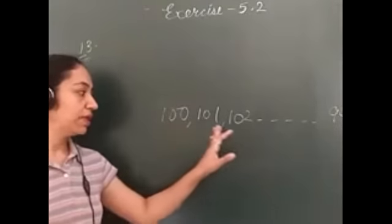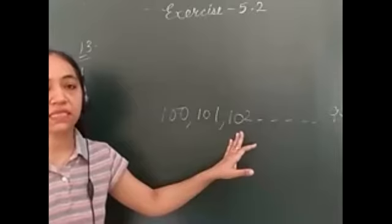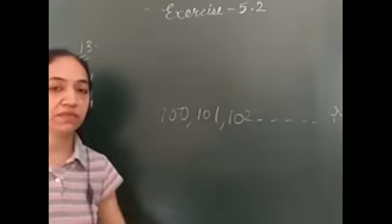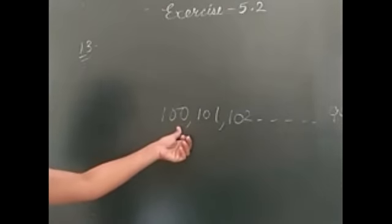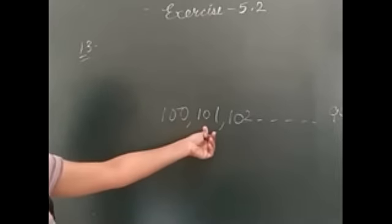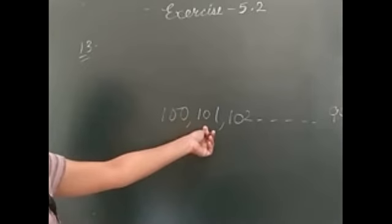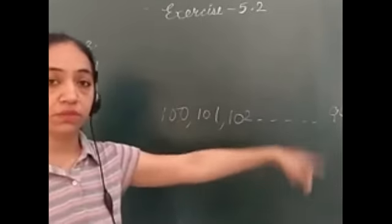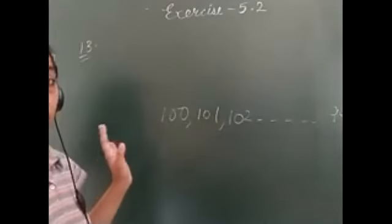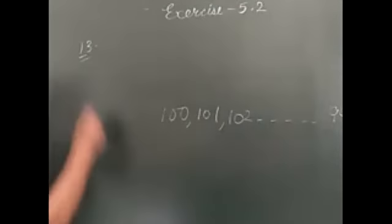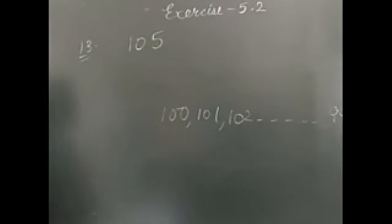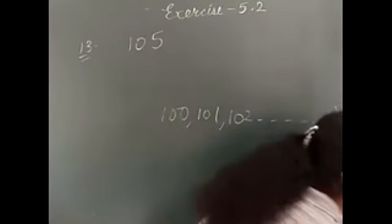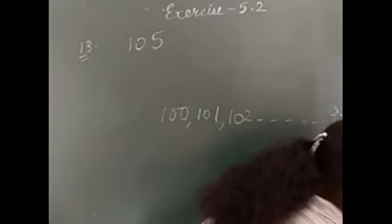When you start the series, which is the first number you will get that is divisible by 7? Is 100 divisible by 7? No. Is 101 divisible by 7? If you divide and check you will get your answer no. 102, 103, 104 - all these are not divisible by 7. The very first 3-digit number you will get will be 105.